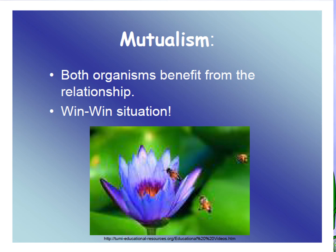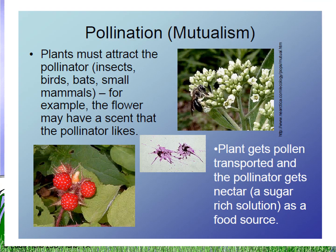Pollination is an example of mutualism. Without pollination, fruits cannot form and ovulation cannot occur in plants, because we know that fruit starts from the flower. Because of pollinators, fruit is able to develop.